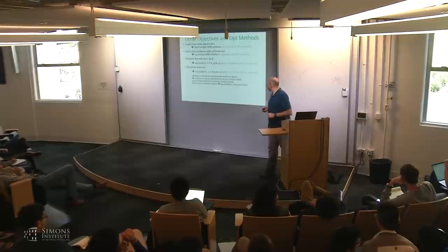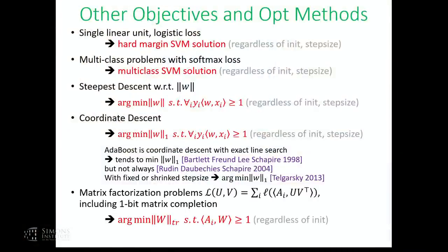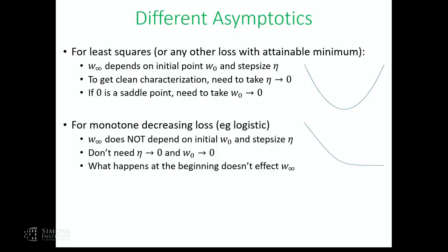We can also look at matrix factorization problems (matrix completion for classification with one-bit measurements). With the exp-loss, you get to the max trace-norm margin in a much more robust way — minimizing the trace norm subject to a margin of one. The reason it's easier to analyze exponentially decaying losses versus squared loss: for monotonically decaying losses, the solution goes to infinity, so the initial point doesn't matter from an asymptotic perspective, and fixed step size looks minuscule compared to where you end up. For squared loss, you end up at a finite solution where early fluctuations matter a lot.